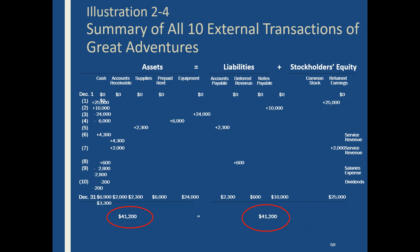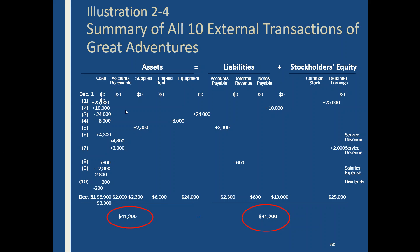On this slide, you can see all 10 transactions listed. There were increases and decreases in cash, accounts receivable, supplies, and other assets across those transactions. The bottom line is that all those pluses and minuses equaled $41,200. We also posted some to liabilities and some to stockholders' equity — those also add up to $41,200. Everything balanced: all debits and credits balance and assets equal liabilities plus owner's equity.